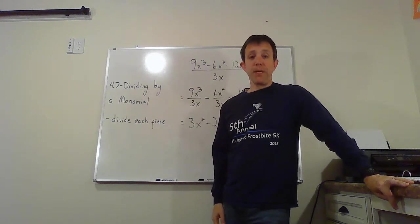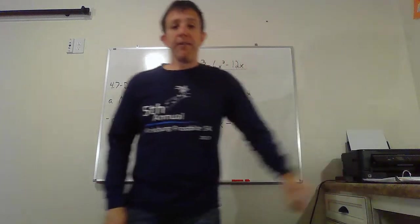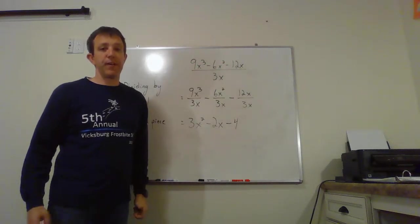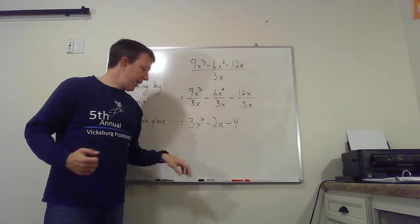All we're going to do is we're going to divide each piece. And so here's what we have: 9x cubed minus 6x squared minus 12x, all divided by 3x.